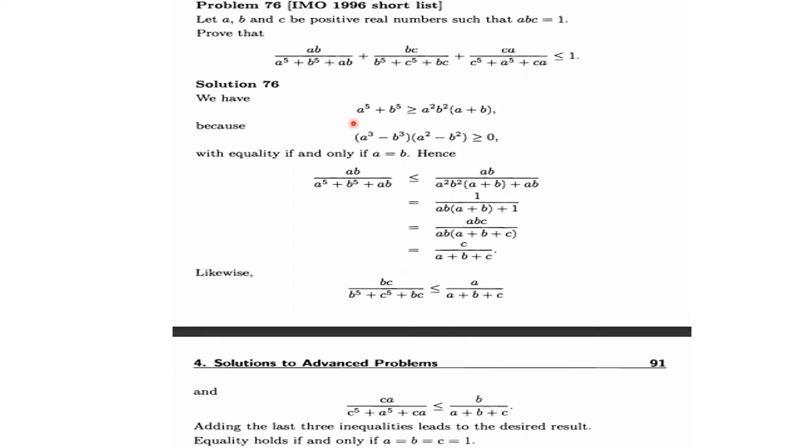We have to prove that a^5 + b^5 is always greater than ab, because...